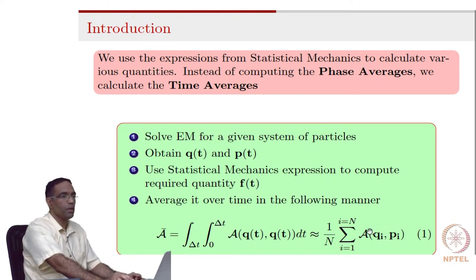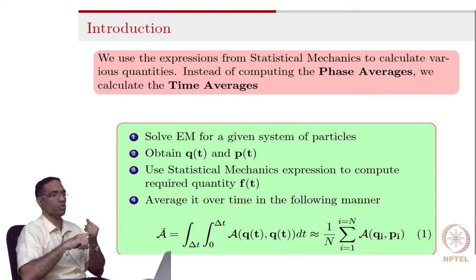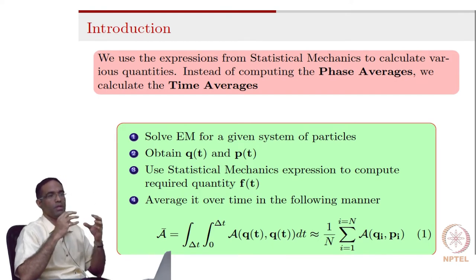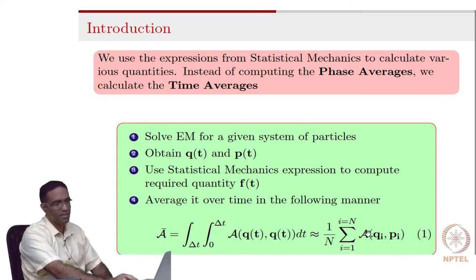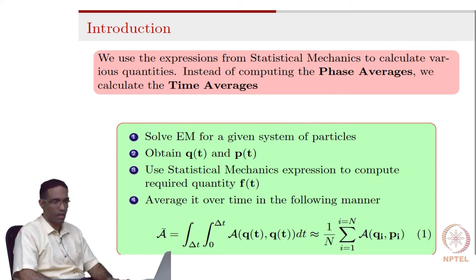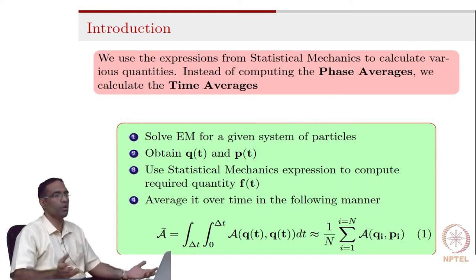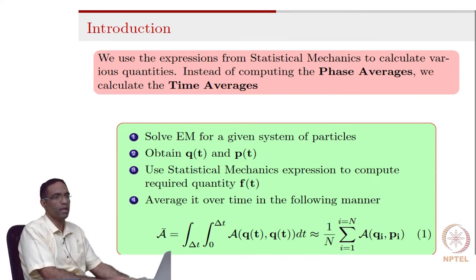In molecular dynamic simulations, the software is capable of giving you the positions and the momenta of all the particles in the system. Once you know a quantity as a function of positions and momenta, you just sum over all time steps for which you have printed out the positions and momenta, add them up, and divide by the total number of samples to give you the average value of that particular quantity. This is how you essentially calculate time averages in molecular dynamics simulations.